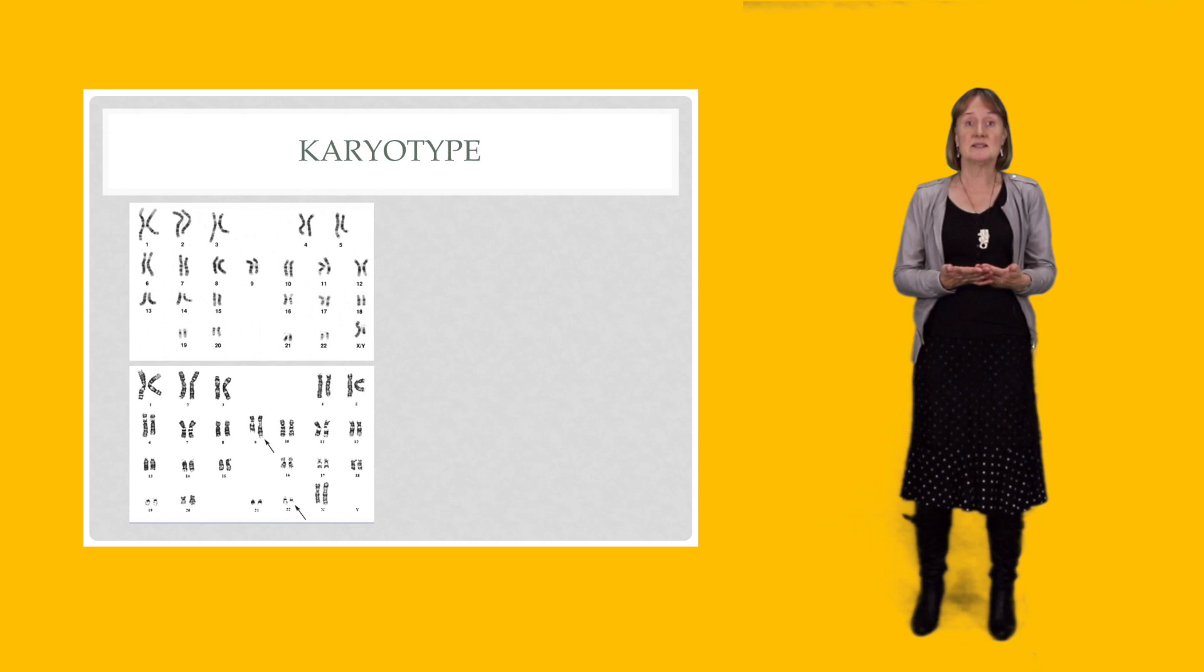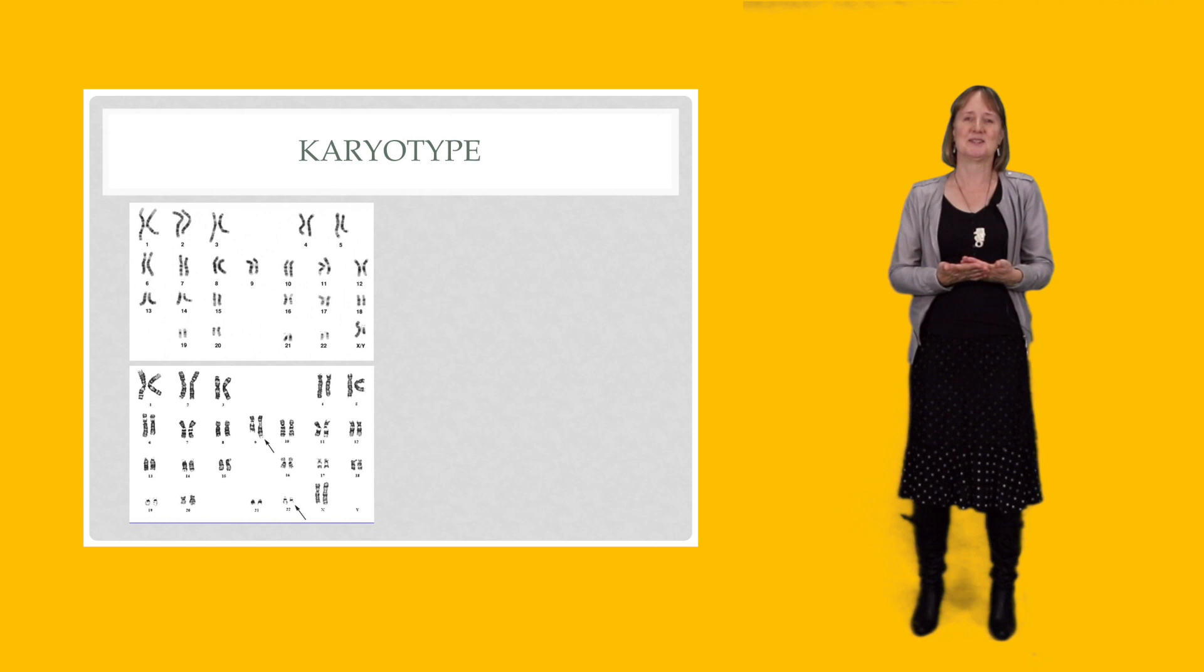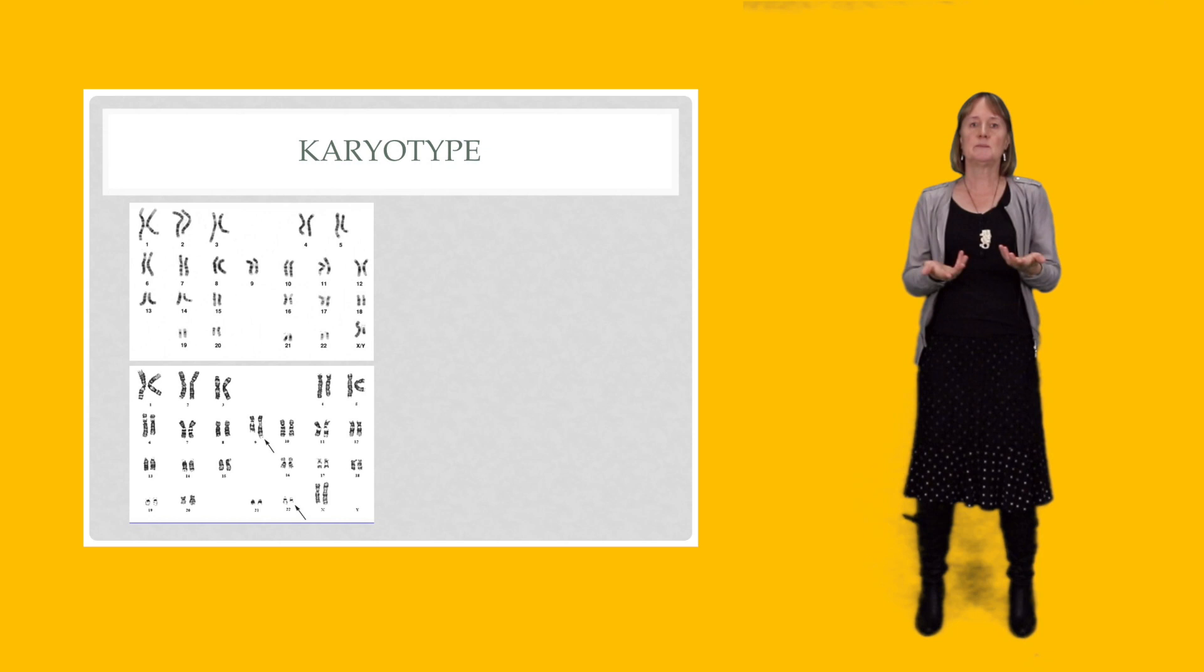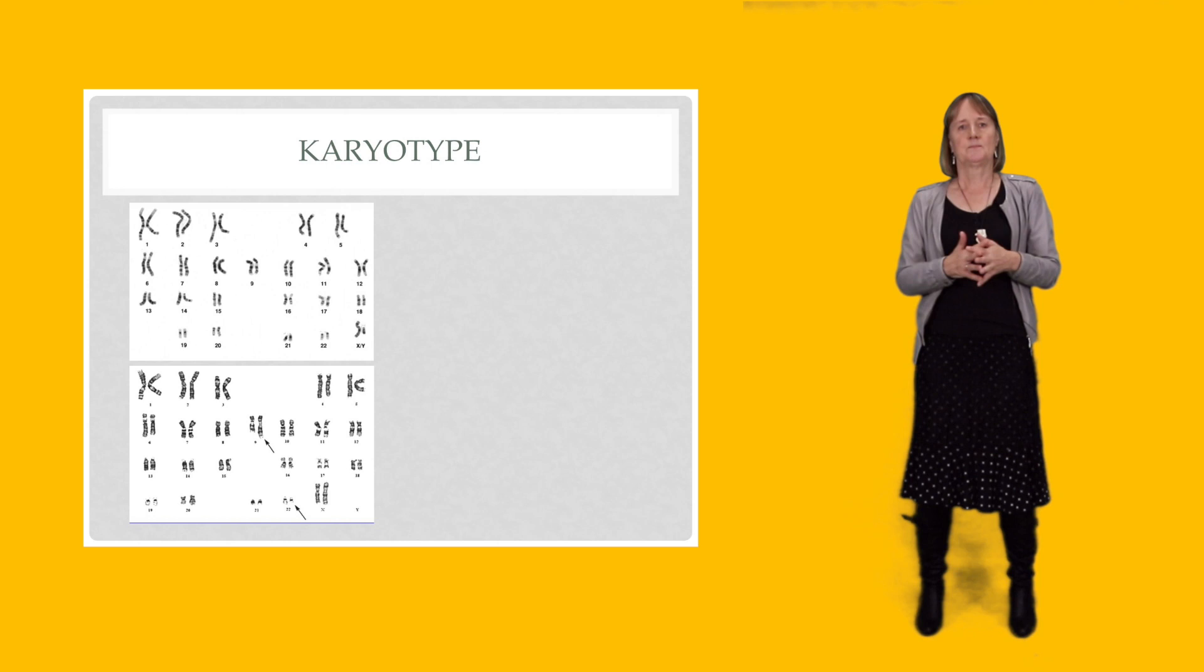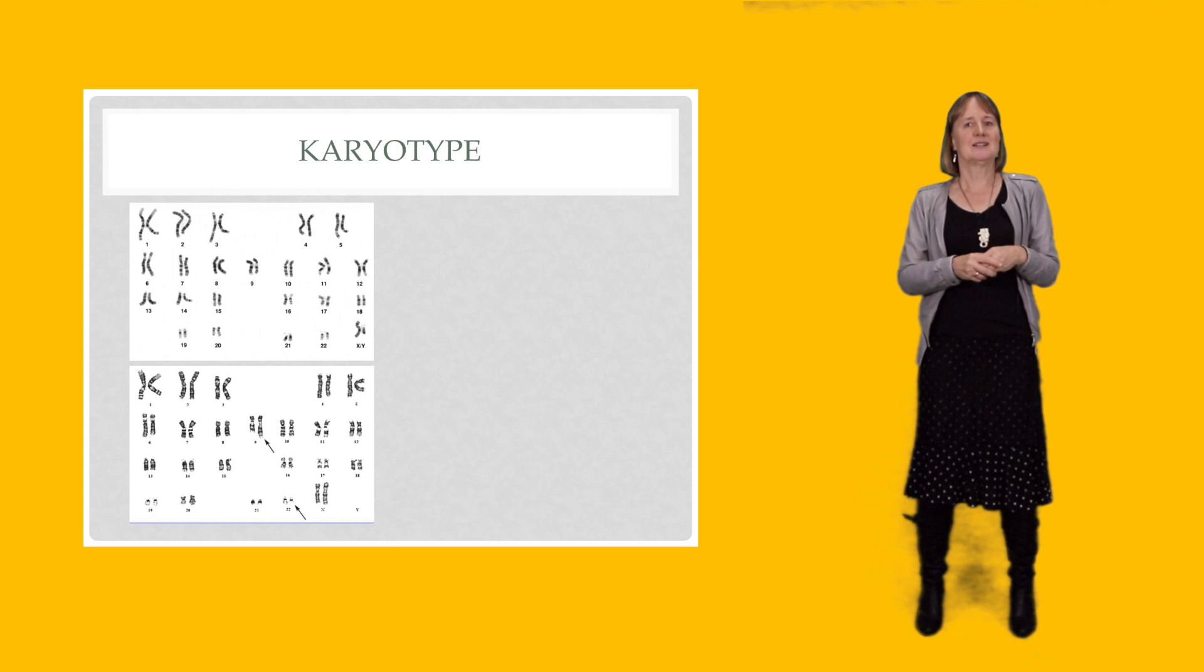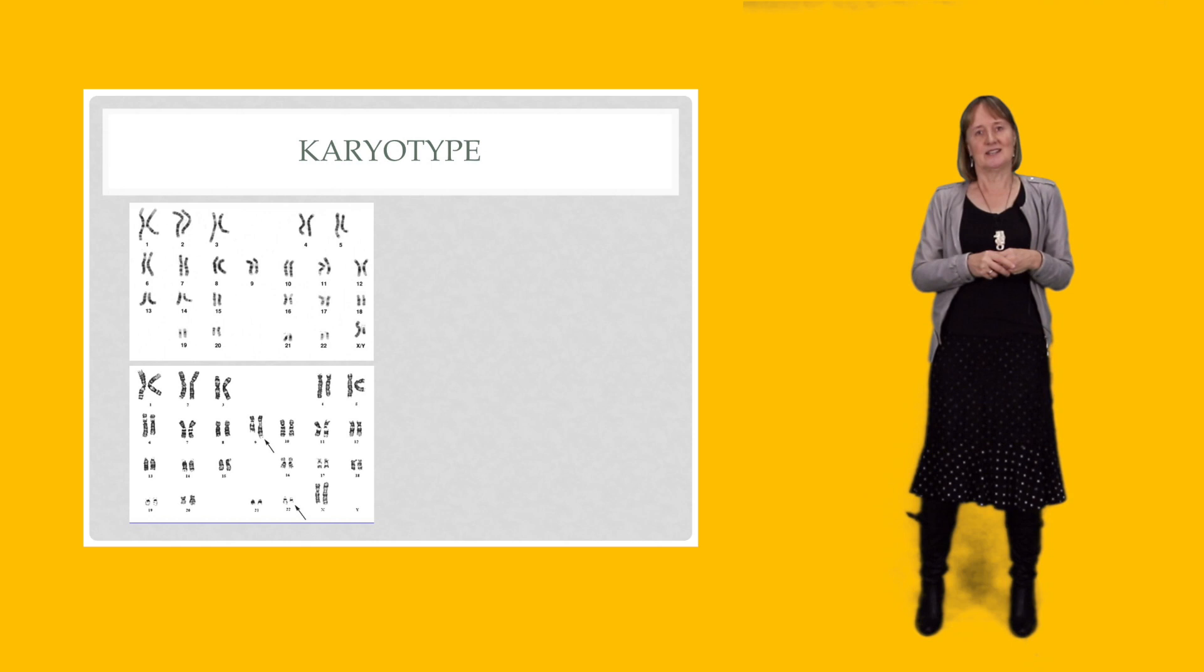Okay, the next thing that really commonly happens when we're diagnosing hematological malignancies is we look at a karyotype, or at least the cytogenetics laboratory looks at the karyotype for us. So these are preparations of chromosomes that have been stimulated in the laboratory and then photographed, and the photographs are arranged so that we can see what each chromosome looks like. And as you can see, they're arranged in pairs.